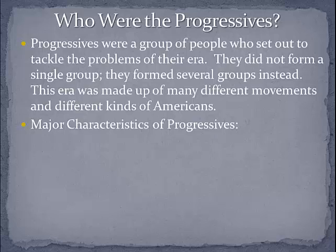Progressives were a group of people who set out to tackle the problems of their era. They did not form a single group; instead, they formed several groups. This era was made up of many different movements and many different kinds of Americans. So we need to identify what are three major characteristics of progressives.